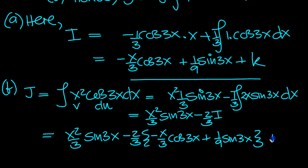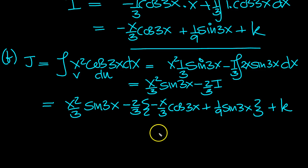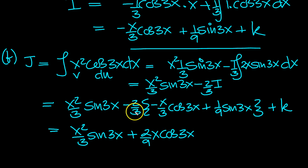And I'll put the plus k now at the end, because it's a constant of integration. Which equals x squared over 3 sine 3x, plus 2 ninths x cosine 3x, when we expand the first term, minus 2 over 27 sine 3x. And then we've got a plus k at the end.